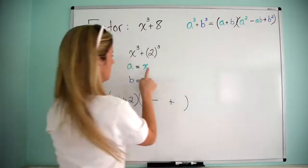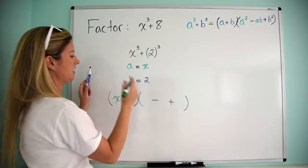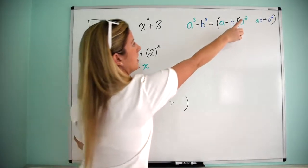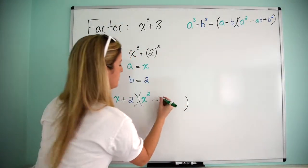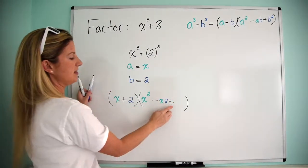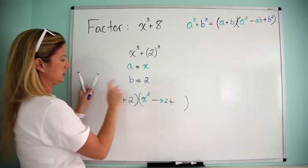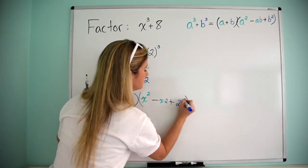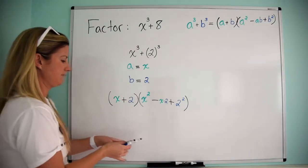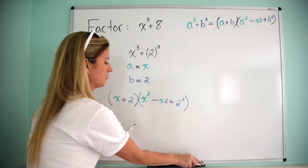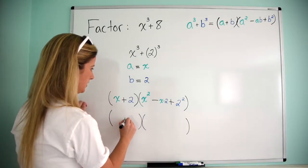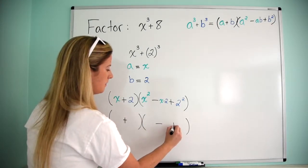Equals a squared, so that's going to be a is x, so x squared, minus ab, so the minus is already there, ab, so that's going to be x, and remember, this is multiplication, times two, and then plus b squared, and remember, b is two, so that's going to be two squared. And then, we can kind of clean this up a little bit. So, again, I'm going to go through with my black marker and put the parentheses and the signs in. So, that's going to be plus, minus, plus.